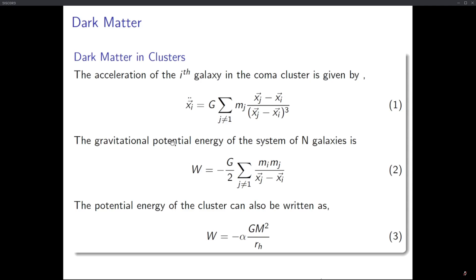The gravitational potential can be written as minus G times m divided by r. For the cluster, we have: W equals minus (G/2) times the sum over i,j of m_i m_j divided by |x_j minus x_i|. The factor of one-half is included because when summing over all galaxy pairs, we don't want to count each interaction twice.